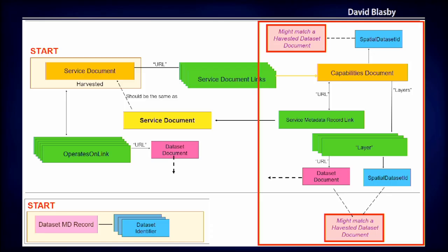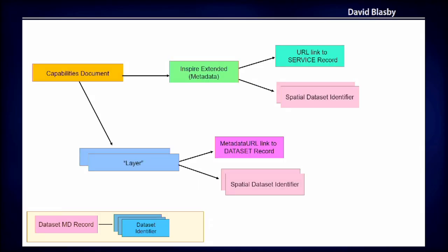Back to our diagram: we talked about the top line — the service document links to the capabilities document. What I want to talk about is connections from the capabilities document to the data and the metadata. I'm going to flip this diagram on its side so we can see more detail about what goes on in a capabilities document for INSPIRE.